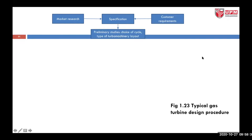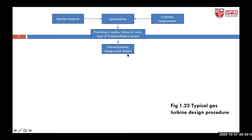Once you have all that, you proceed to preliminary studies. You need to decide the choice of cycle — whether it is an open cycle or closed cycle — and the type of turbomachinery layout, whether you will use a centrifugal compressor, an axial compressor, or a combination of both. Then you conduct thermodynamic design point studies.